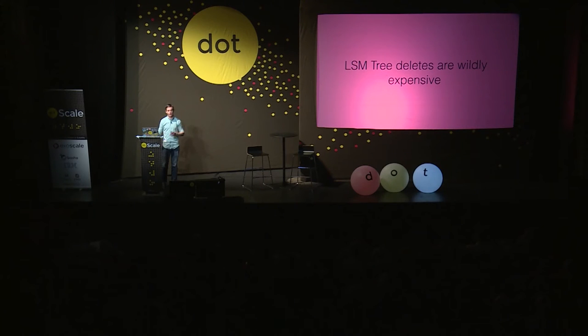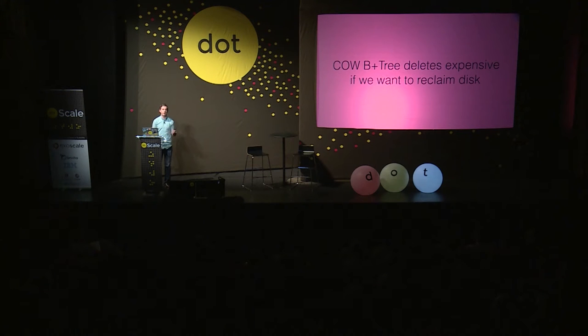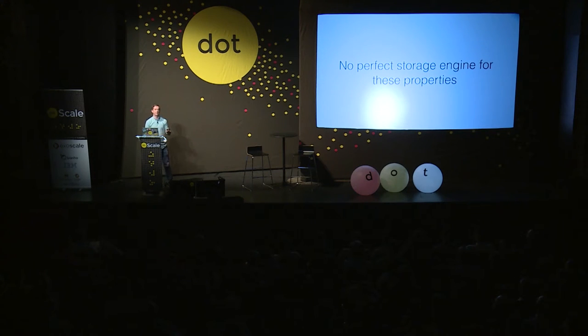Looking at LSM trees, deletes are wildly expensive — a delete is actually more expensive than a write because you write a tombstone record, which slows down query performance since you have to resolve tombstones with records during reads. Then later you run a compaction, which takes an immutable file and rewrites the entire thing without the tombstone records. For copy-on-write B-plus trees, deletes aren't expensive themselves, but reclaiming disk space is. The result: there's really no perfect storage engine for these access properties.